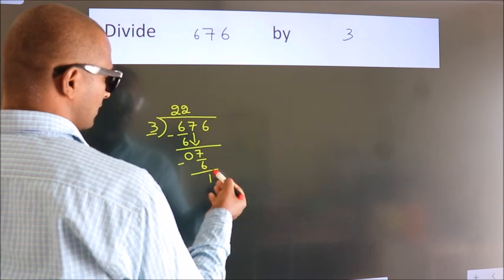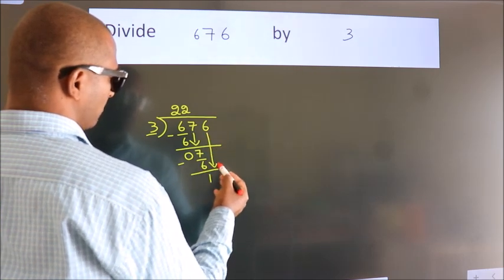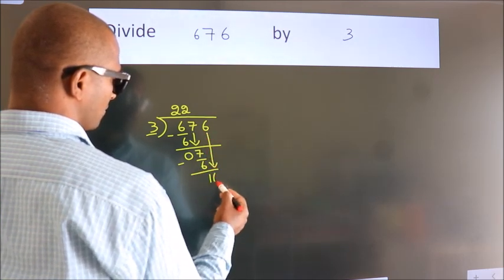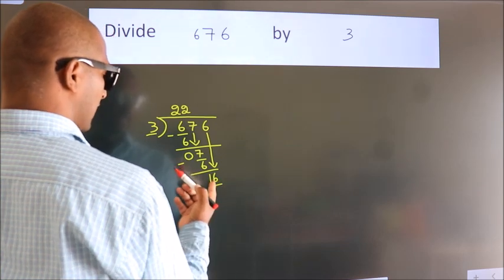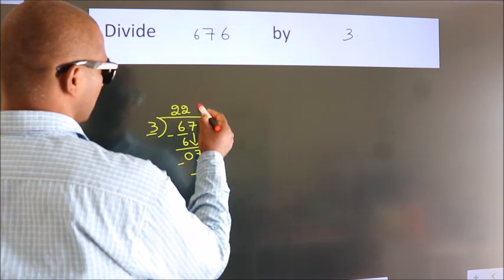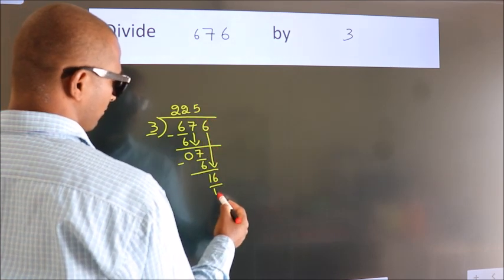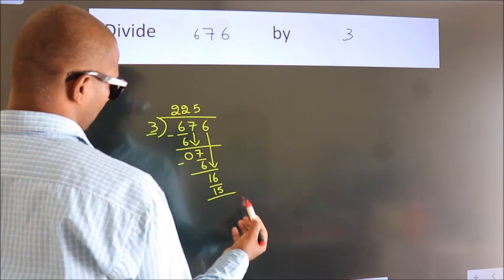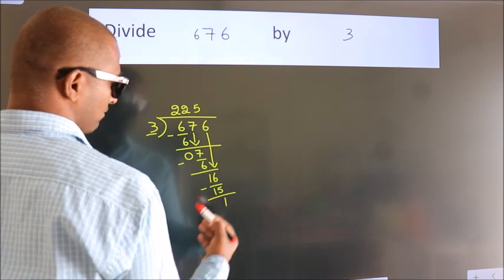After this, bring down the beside number. So 6 down. So 16. A number close to 16. In 3 table is 3 5s, 15. Now we subtract. We get 1.